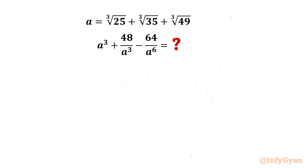Welcome back to Infigyan, my dear friends. In this video we have another challenging and interesting question from Radical Maths. Given a equals cube root of 25 plus cube root of 35 plus cube root of 49, find a cubed plus 48 over a cubed minus 64 over a to the power 6.